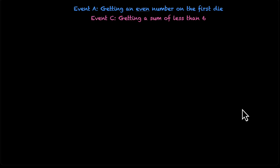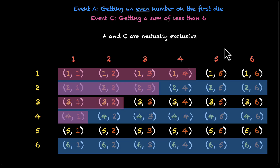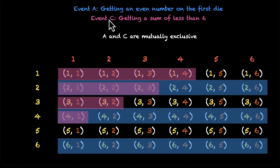Statement 5: A and C are mutually exclusive. Mutual exclusivity requires no overlap, but we can see overlap: the points (2,1), (2,2), (2,3), and (4,1) all belong to both the pink zone (event C) and the blue zone (event A). So there is overlap — A and C are not mutually exclusive. This statement is false.